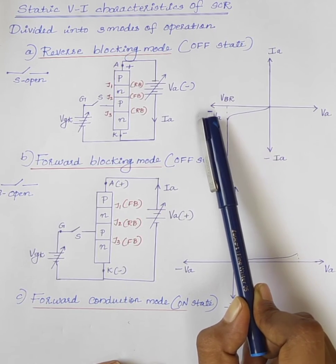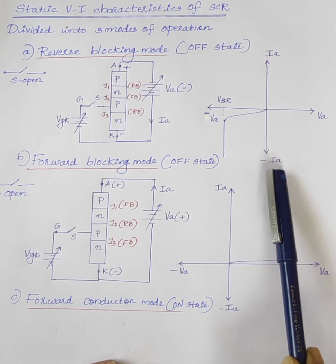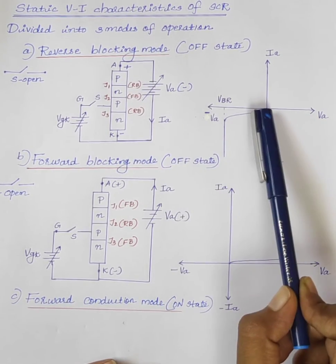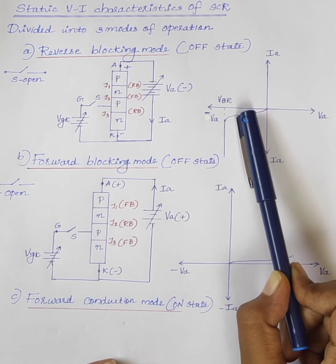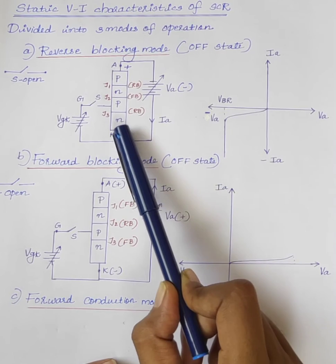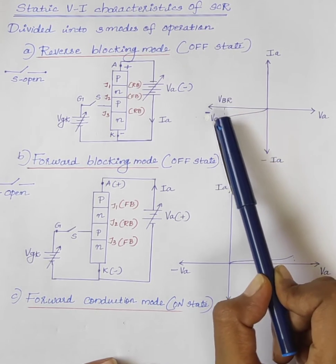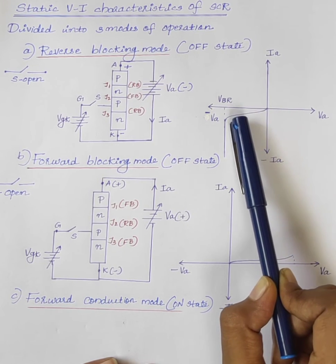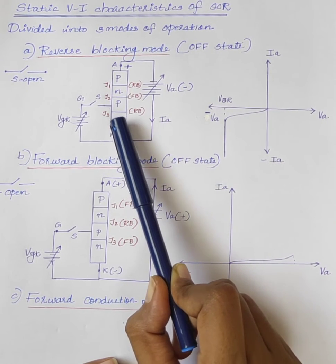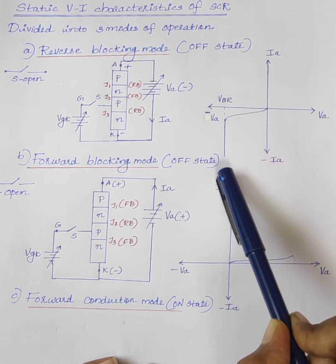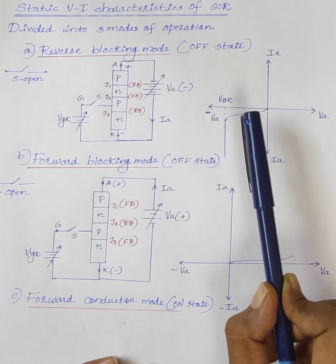The circuit is reverse biased, therefore the voltage is minus VA and the current flows from cathode to anode — that is, opposite to normal current flow, so the current is minus IA. Due to the reverse biased condition, as the voltage increases, a small leakage current flows through the circuit from cathode to anode. If the reverse voltage is increased to a particular voltage known as reverse breakdown voltage VBR, the avalanche breakdown of junctions J1 and J3 occurs, and the reverse current increases rapidly.